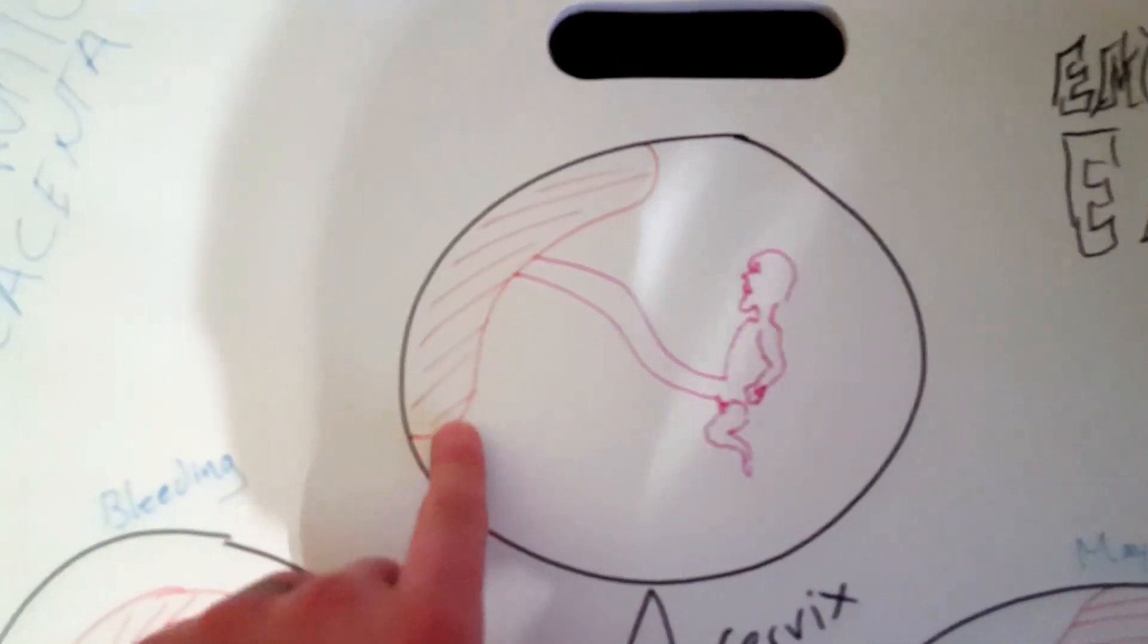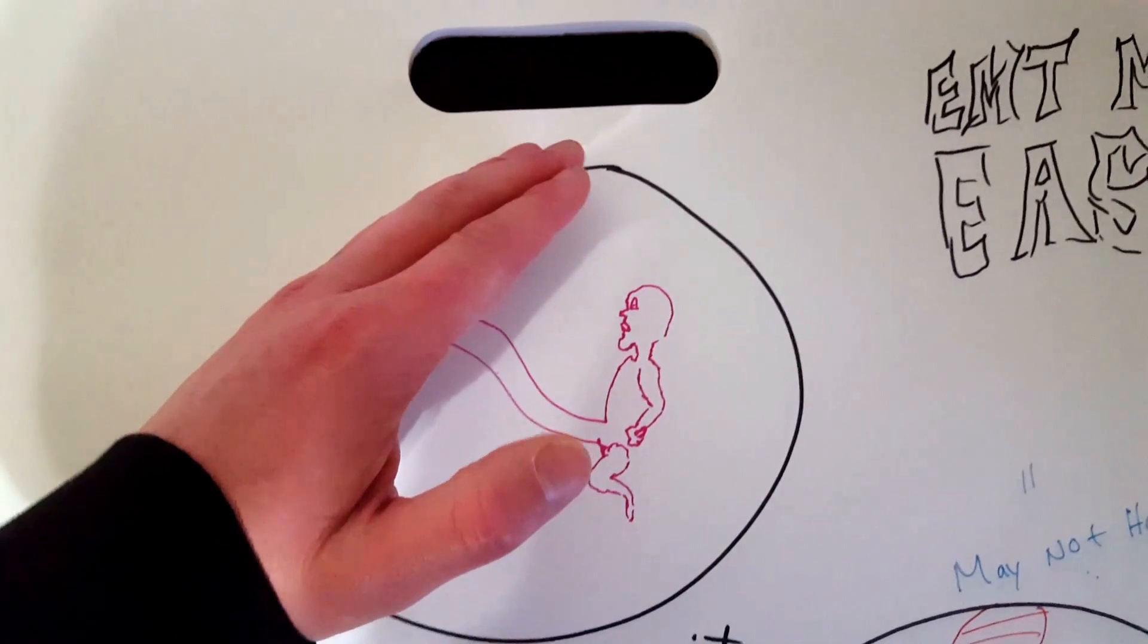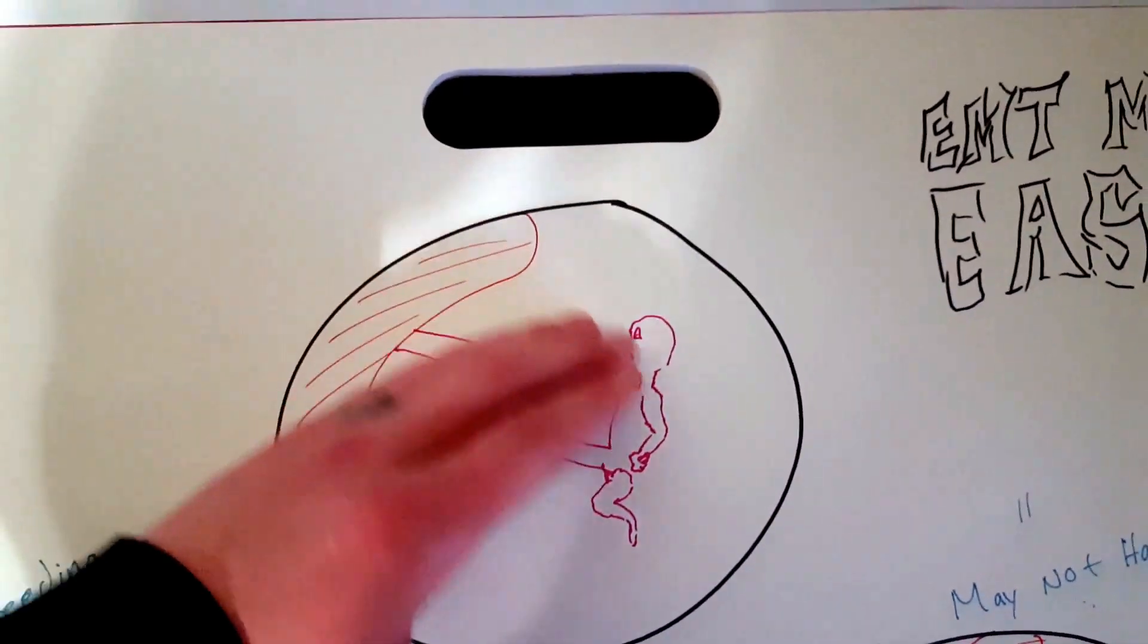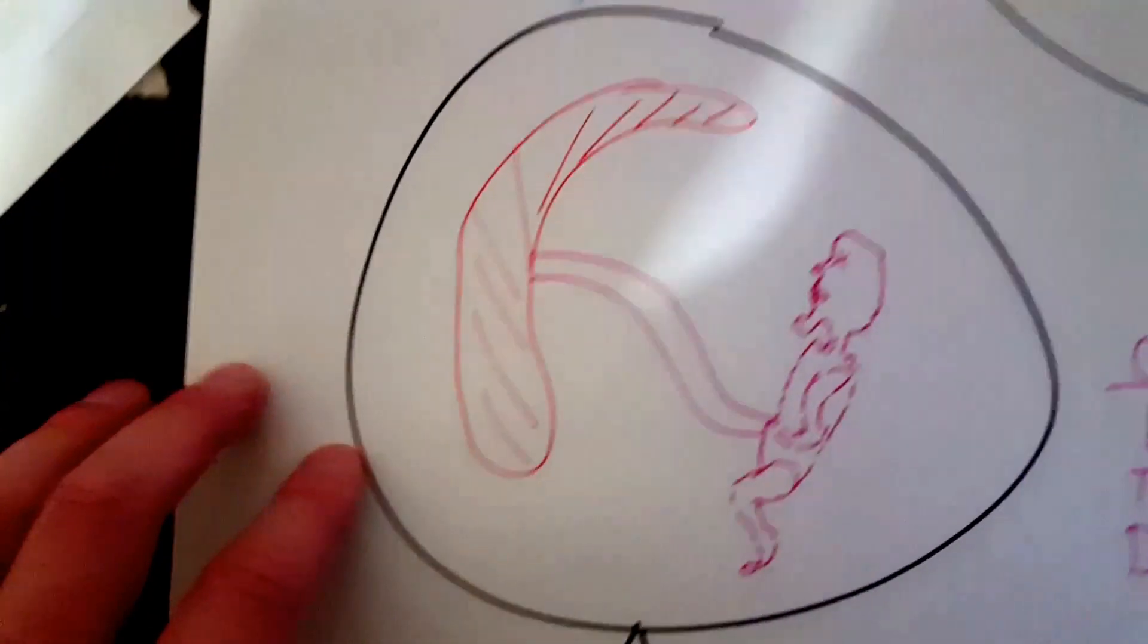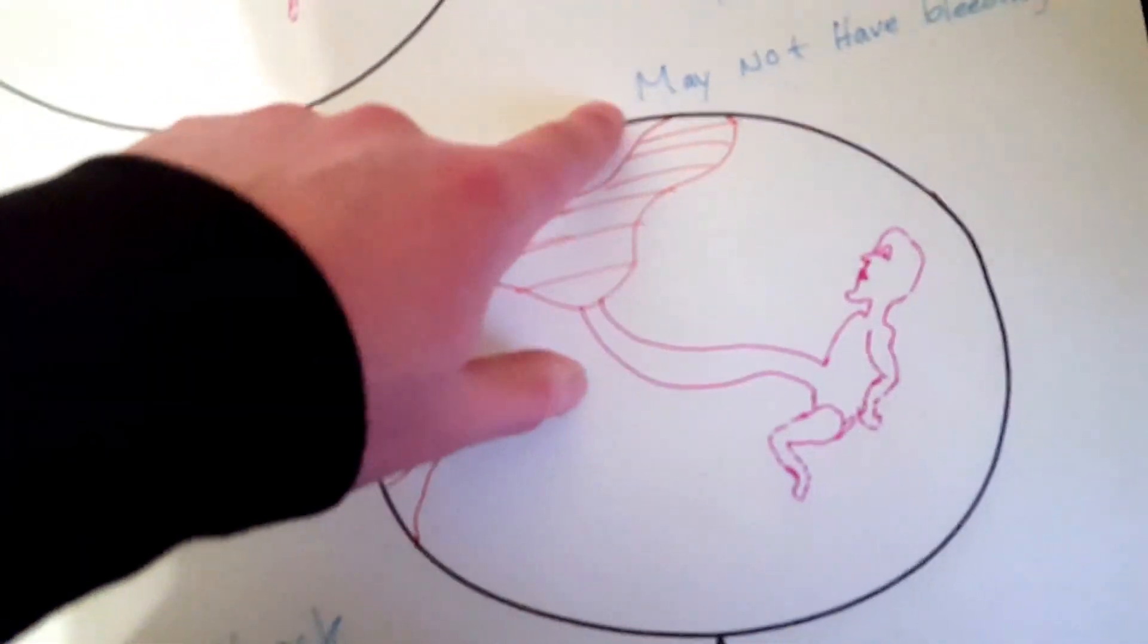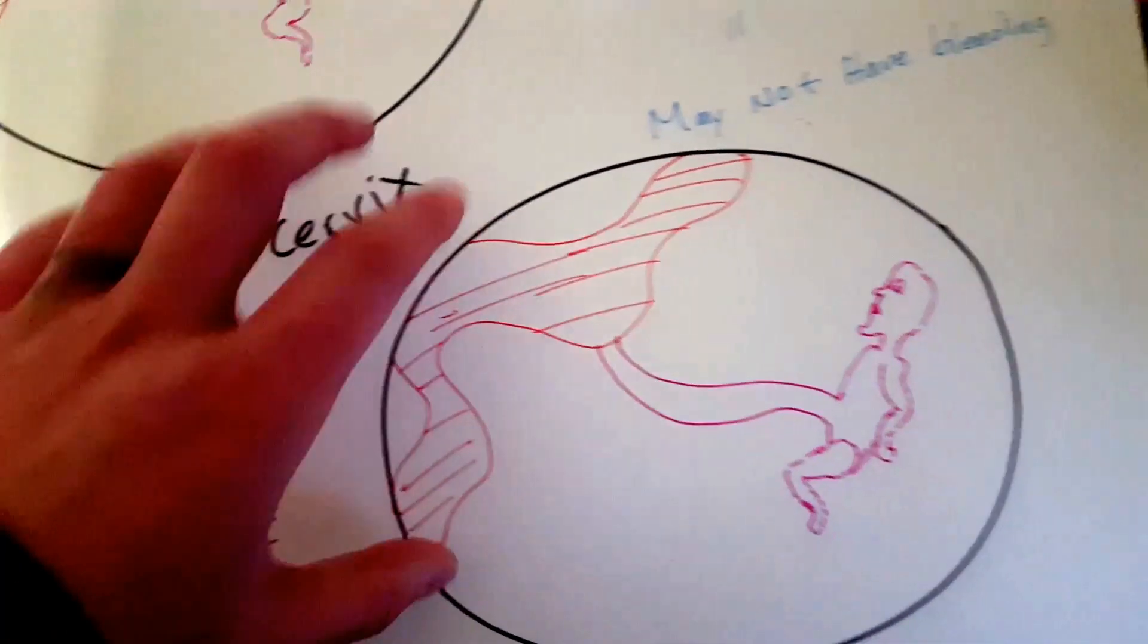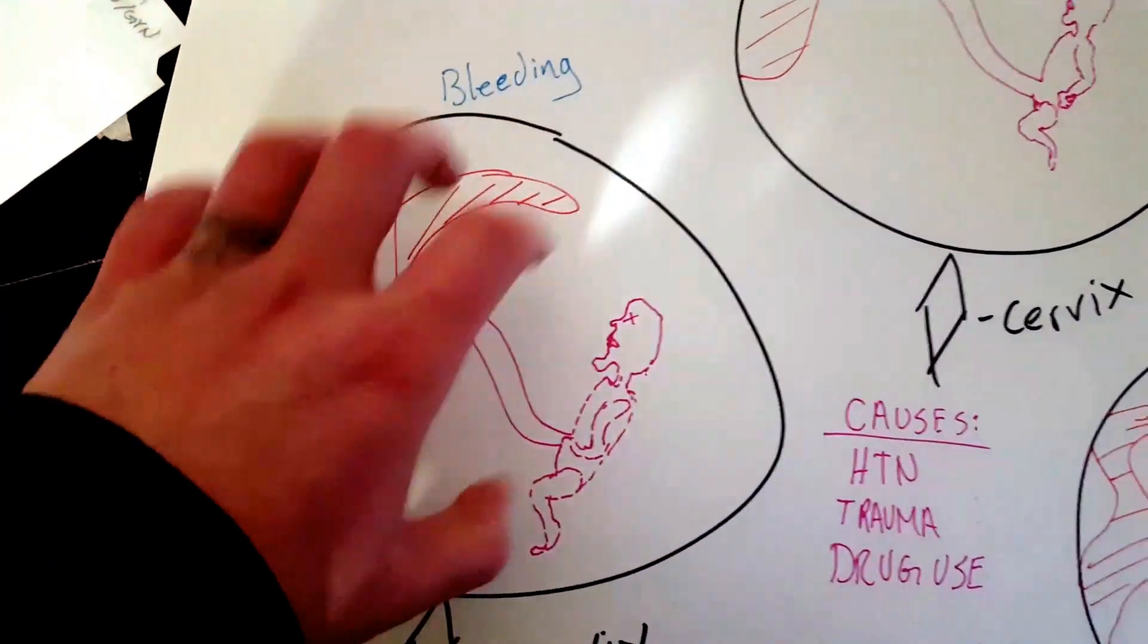What happens is that it's just what it sounds like. The placenta ruptures or tears away from the uterine wall. You have a full separation of the placenta from the uterine wall or you have a partial separation. See where just like a little pocket separates. This is not that big of a deal but it can turn into this and this is a big deal.